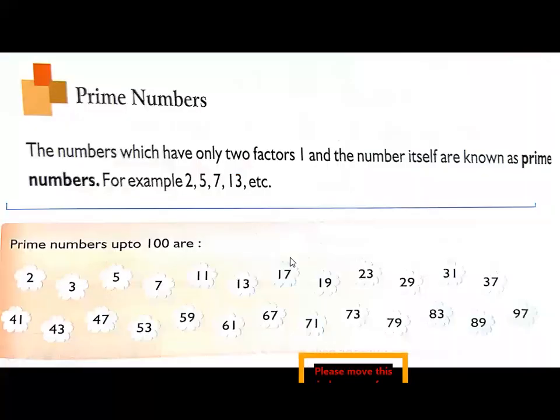Let's discuss one by one. The first type of number is prime numbers. Look at the definition of prime numbers. The numbers which have only two factors, 1 and the number itself, are known as prime numbers. For example, 2, 5, 7, 13 and so on.